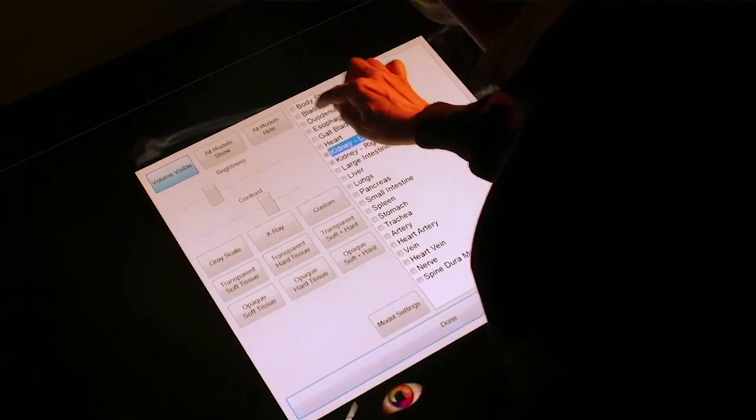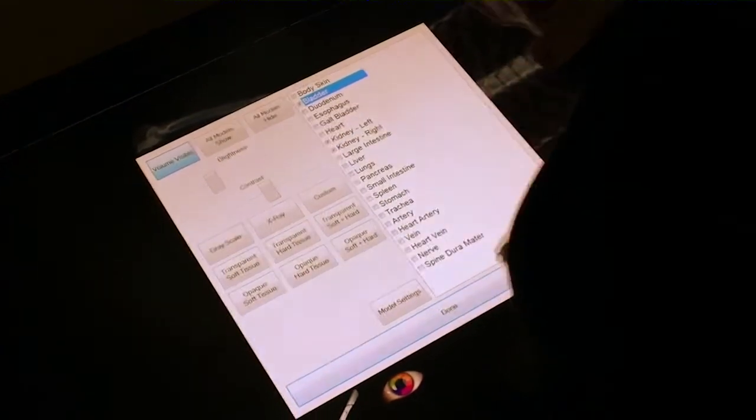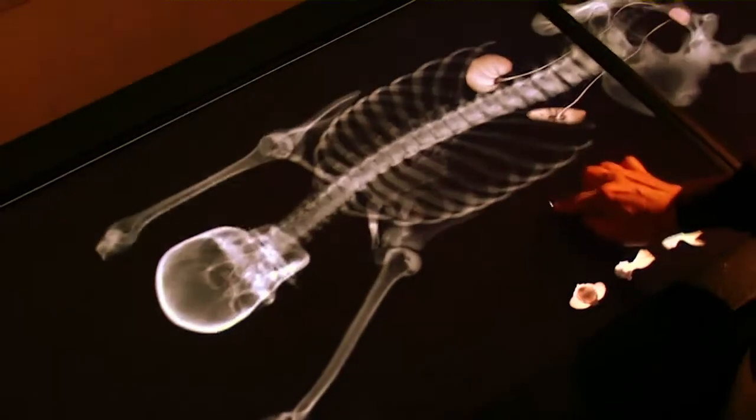We can look at the body with many different types of visualizations, such as opaque hard tissue or even as an X-ray.